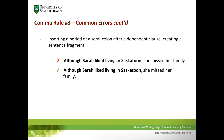Another problem is inserting a period or semicolon after a dependent clause, creating a sentence fragment — which is a serious error, much like a comma splice. For example, incorrect: 'Though Sarah liked living in Saskatoon; she missed her family.' You fix this by replacing the semicolon with a comma: 'Though Sarah liked living in Saskatoon, she missed her family.' Now you have perfect punctuation.